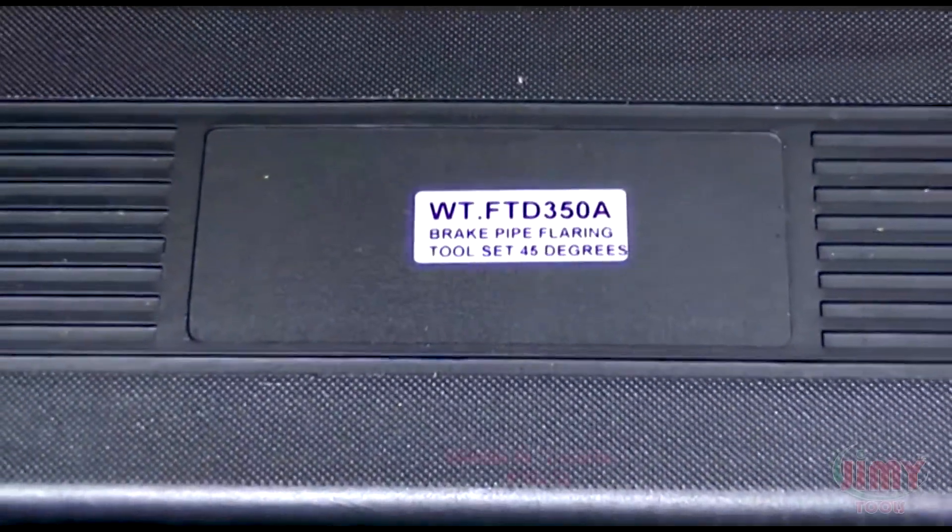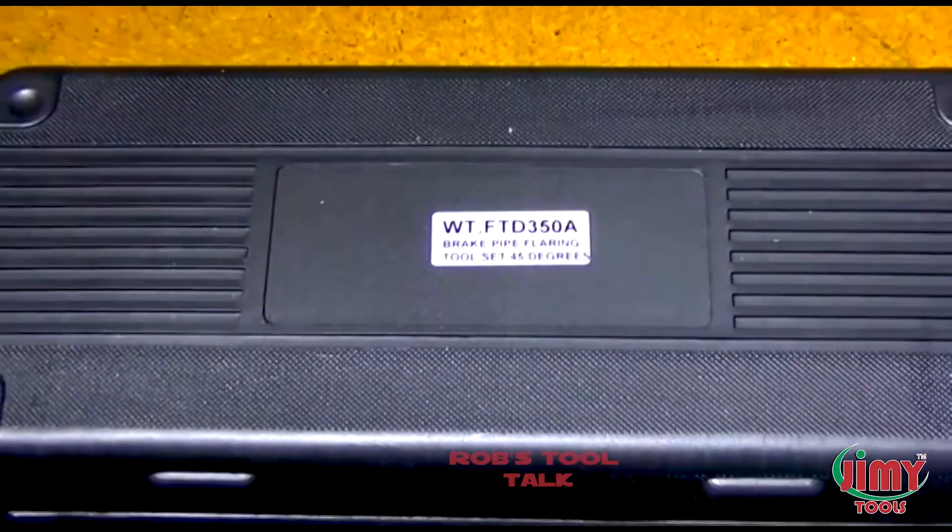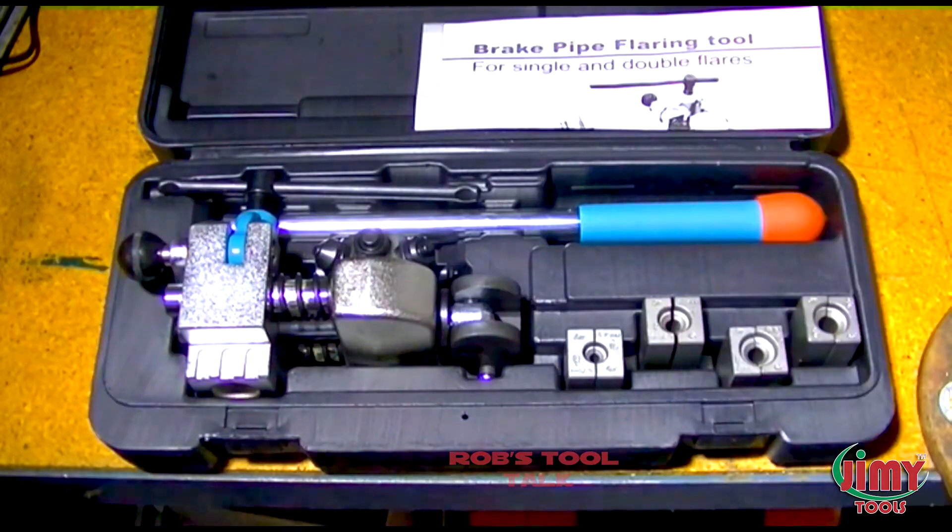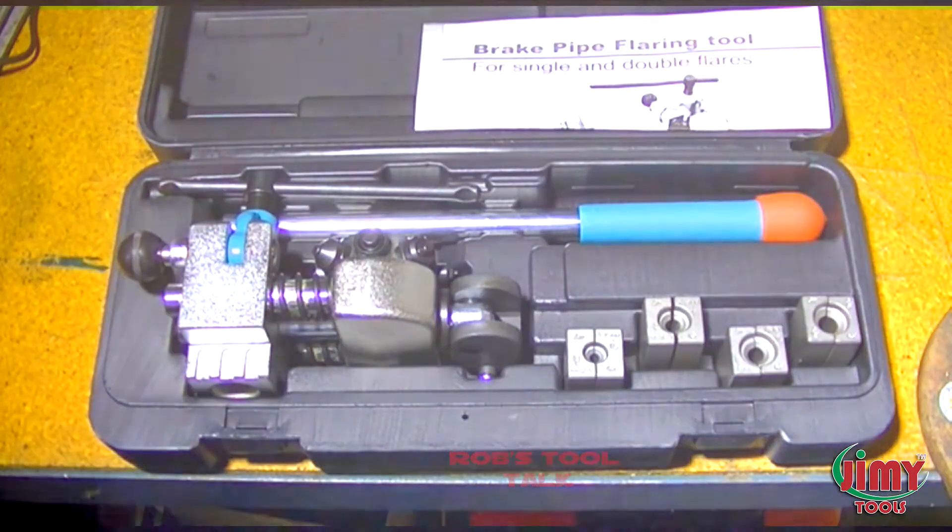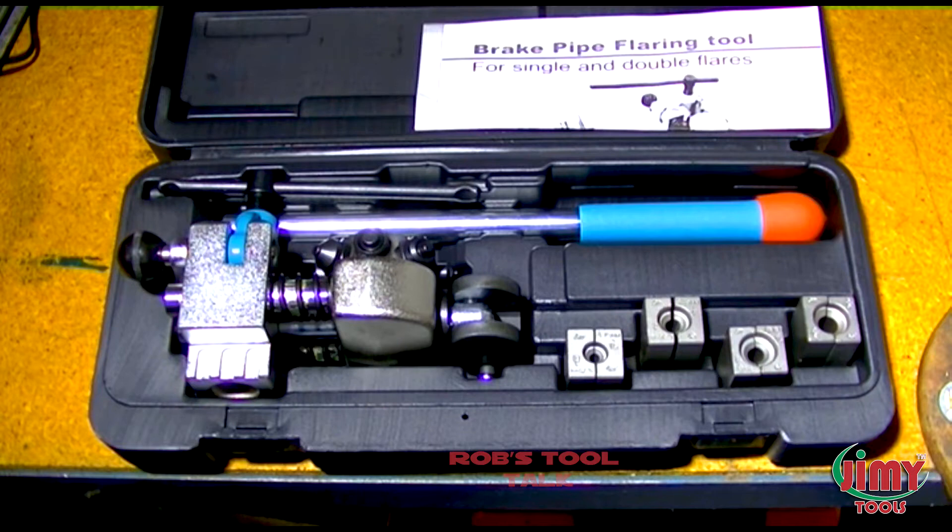Hi, today we'll be having a look at a new manually operated brake pipe flaring toolkit from Jimmy Tools. With this vice-mounted kit, you will be able to make single and double 45-degree flares as well as ISO DIN bubble ends to suit metric applications.